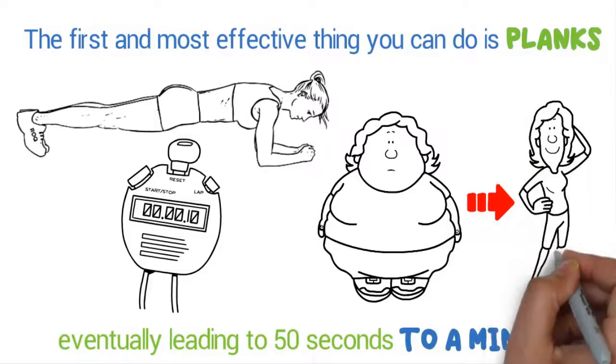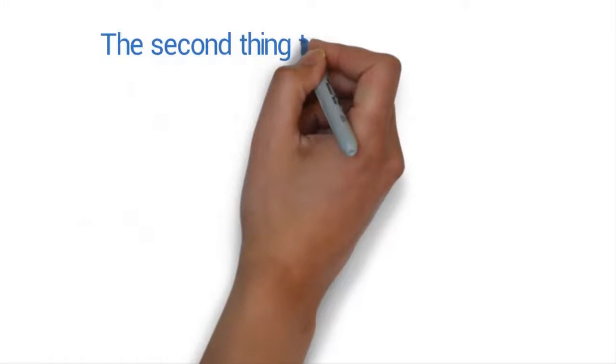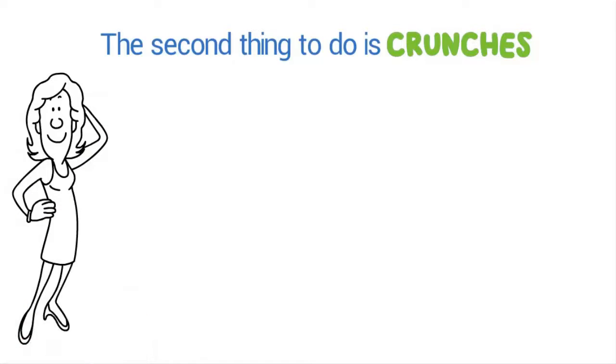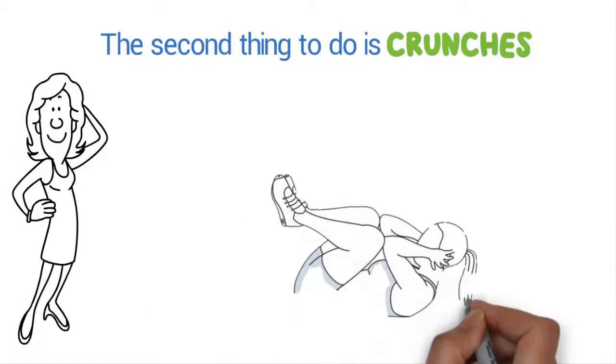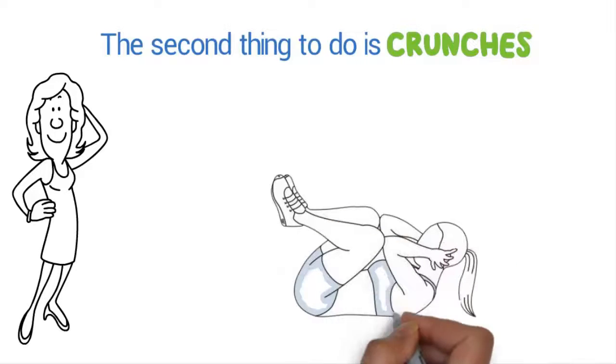This will cause sweating, which is also an efficient way of losing fat. The second thing to do is crunches. Crunches are a great form of fat burning exercise. A set of five crunches in the morning and five in the evening could prove really helpful in burning stubborn fat.